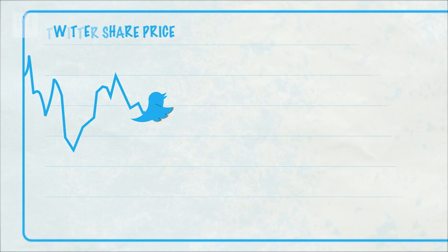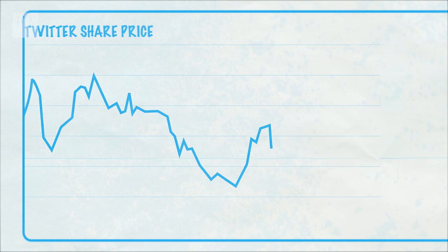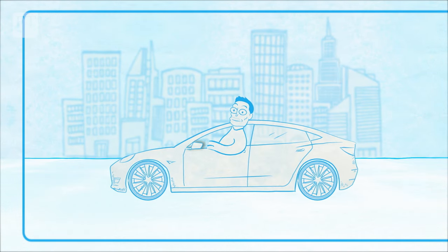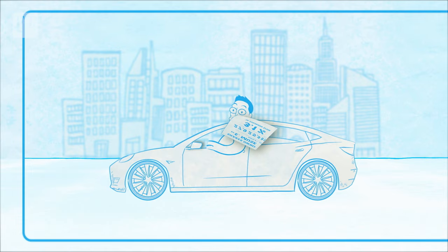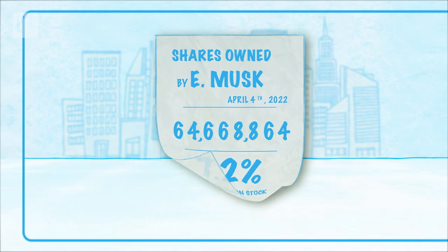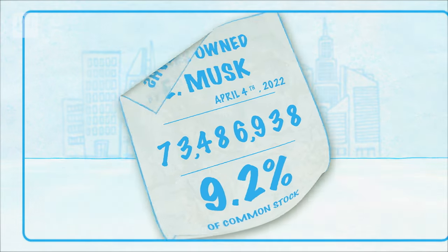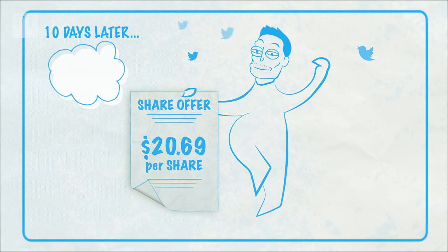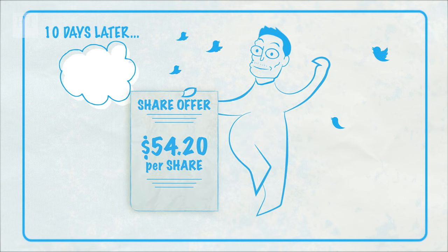No one initially expected that Musk would make a bid to take the company private. The billionaire founder of Tesla disclosed a stake in the social media platform in early April, becoming its biggest shareholder. Ten days later, he offered to buy Twitter for $54.20 per share.